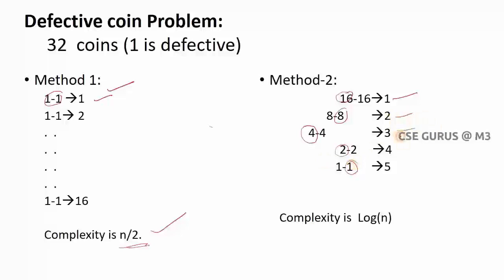Following this procedure, for 32 coins I get only 5 steps. For 64 coins it would be 6 steps. So for n coins, the complexity is log n. Comparing method 1 (n/2) with method 2 (log n), method 2 is clearly the best. This same approach is what we follow in the divide and conquer method.